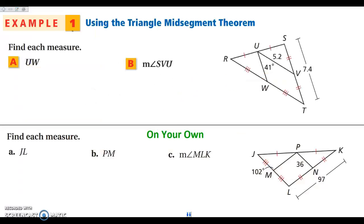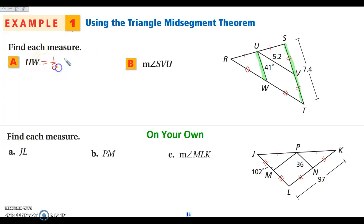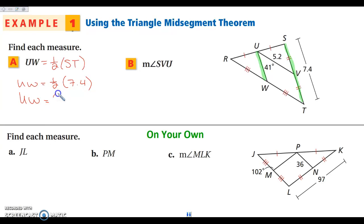If you have any questions about that, go ahead and write it down. Now let's take a look — we want to find each measure. If I want to find UW, I look at the side of the triangle that it doesn't touch, which gives us the parallel side. UW will be half the length of ST. ST is 7.4, so UW is going to be half of 7.4, which gives us UW = 3.7.